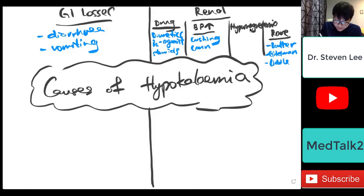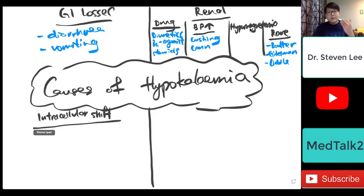Of course, the third thing, so renal makes a huge branch from the causes of hypokalemia. So number three, you can also look at intracellular shift. That means the potassium ions are getting into the cells. So once again, I'm not going into the pathophysiology behind this. If we have time in the future, maybe we can talk a little bit about it.